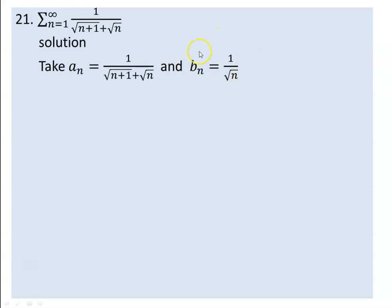By limit comparison test, we look at the sequence. By the limit comparison test conditions, we check the nature of convergence. A series made by this is a divergent p-series.